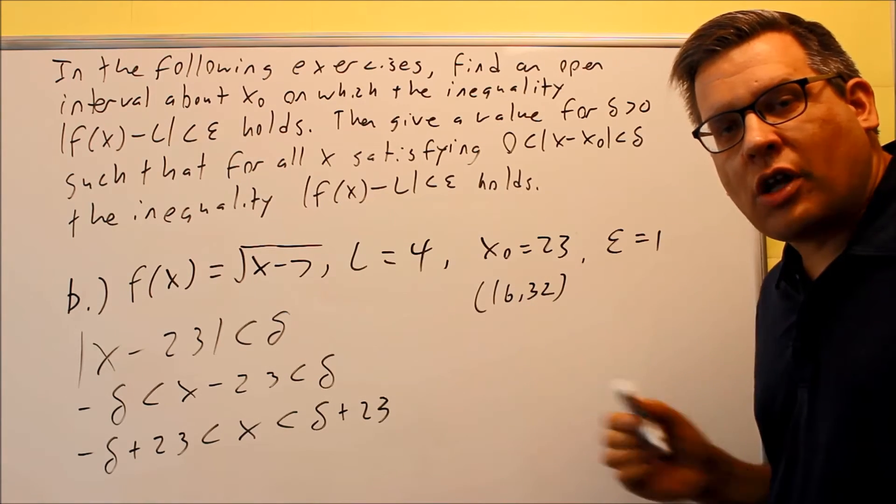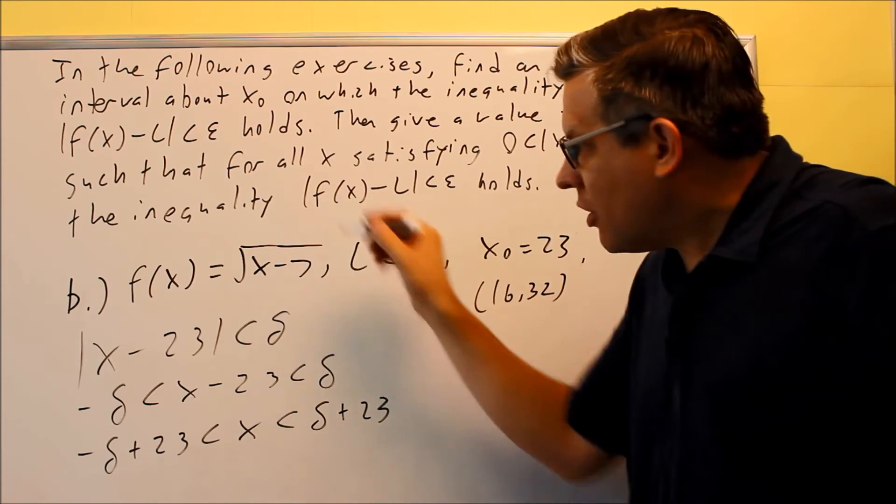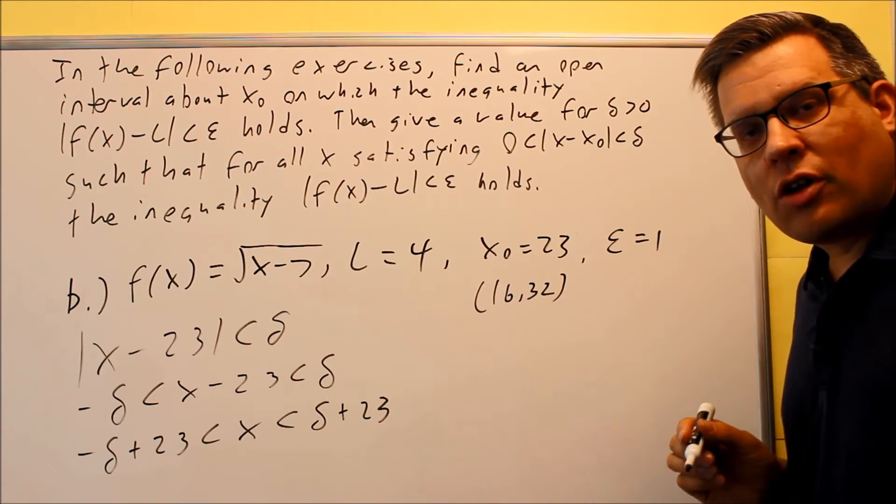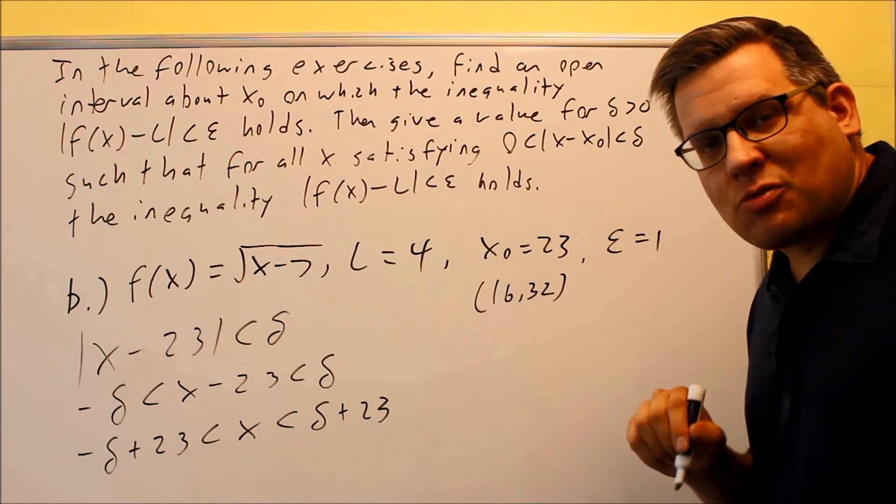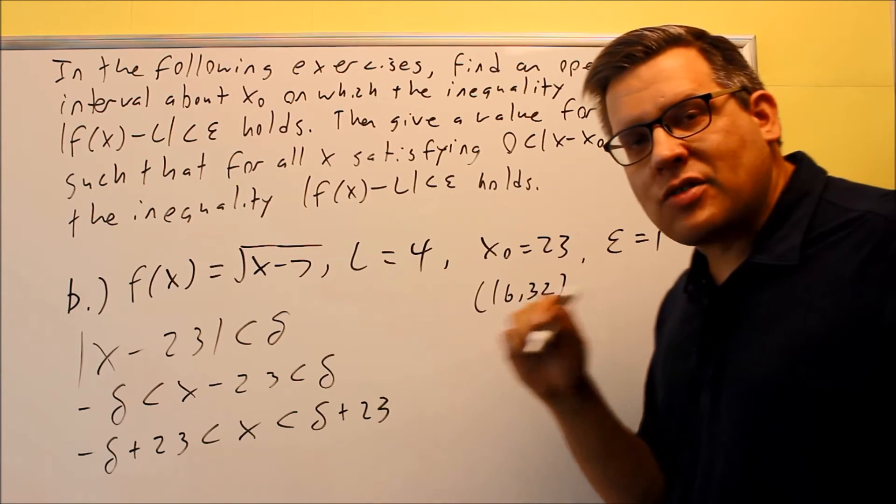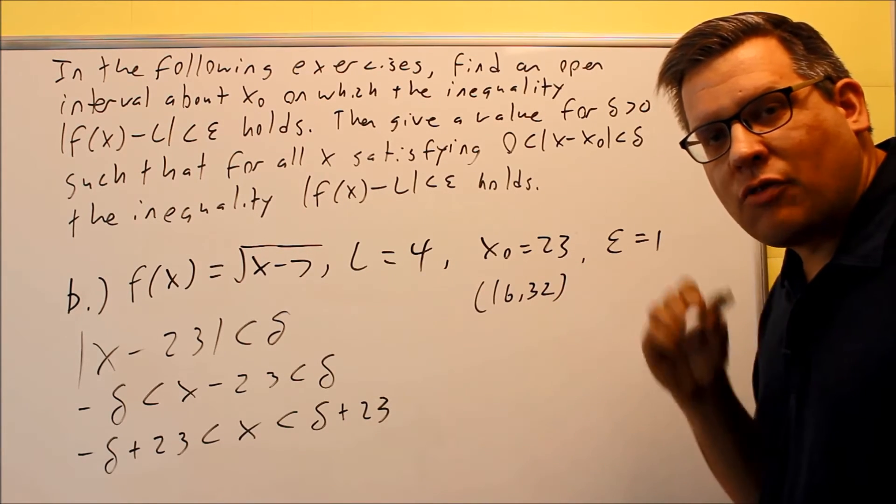So this is different than the previous example that was linear. Linear ones, you'll end up getting delta to be the same, but if it's not linear, then you usually get two different values for it. And we want to pick the one that's the smallest one because, again, we want to minimize the error in the x direction, so we're looking for the smaller one.